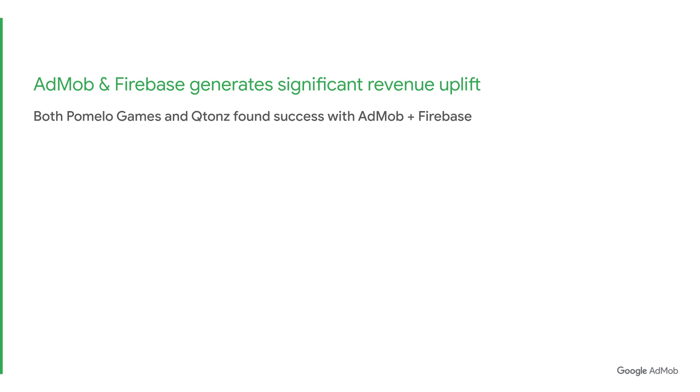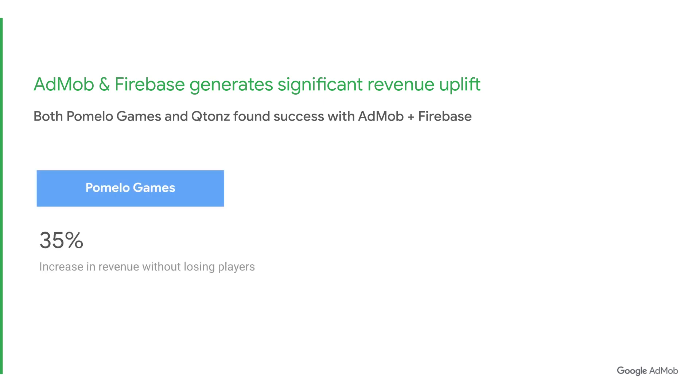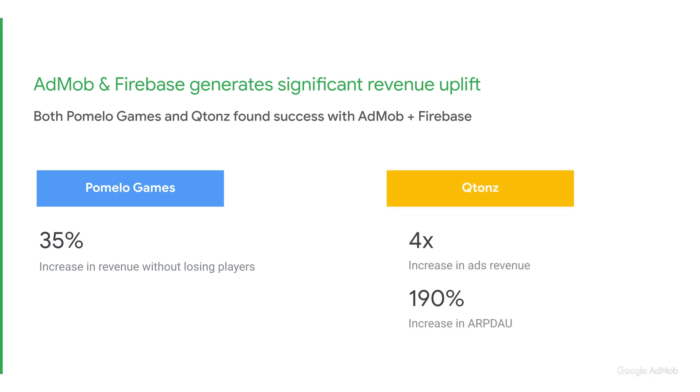Publishers who use AdMob and Firebase tools to test formats have seen significant revenue uplift, while keeping retention rates stable. Pomola Games used Firebase to increase revenue by up to 35% without losing players. Qtons used Firebase to 4x their ads revenue, while achieving a 190% increase in ARPDAU.